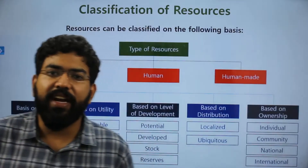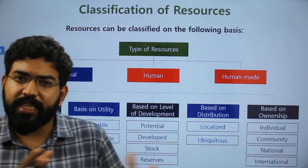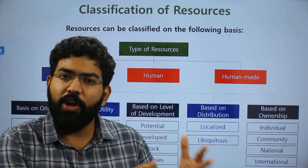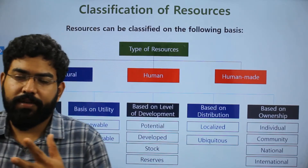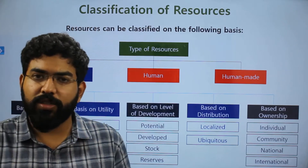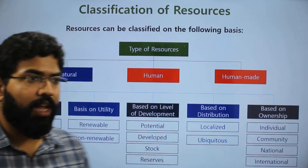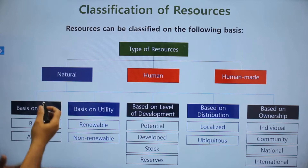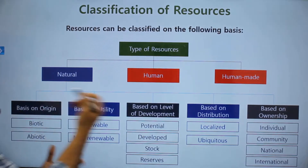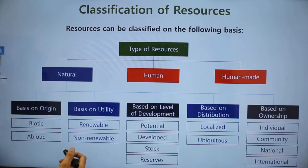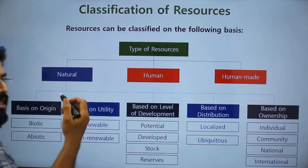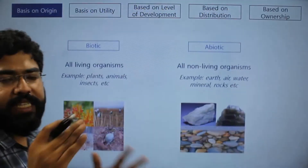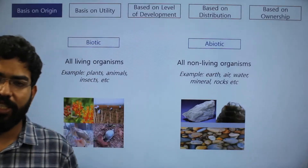Now let us see how we can classify different resources. Resources can be classified into natural, human, and human-made (artificial) resources. Natural resources are further subdivided based on different criteria: the origin of the resource, the utility, the level of development, where it is distributed, and who owns it. These five sub-categories determine the various classifications.